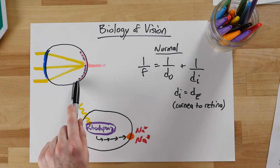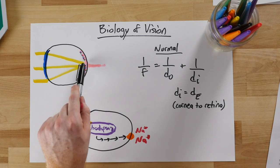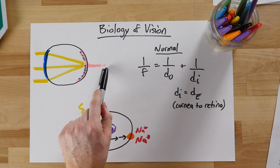The retina has light-sensitive cells known as rods and cones that activate nerves that can send information to the brain.